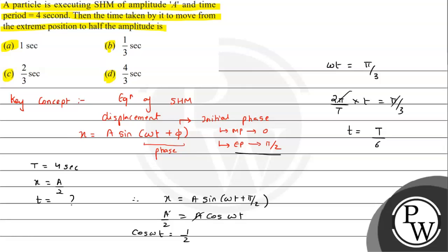T/6, and T is given as 4 seconds, so 4/6 = 2/3 seconds. So this is the answer for the question we are getting. Match your option C. So I hope you understood the solution. All the best.